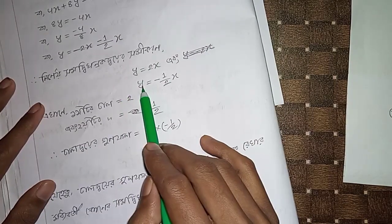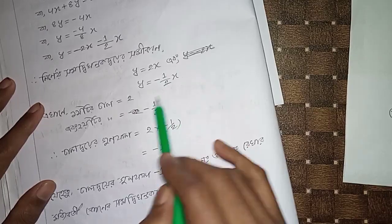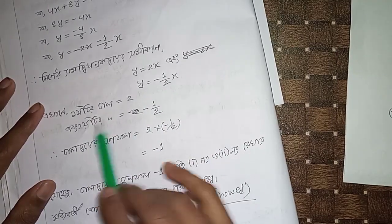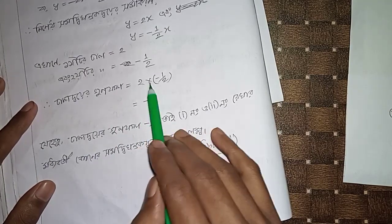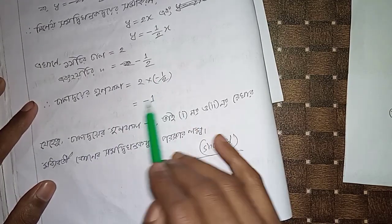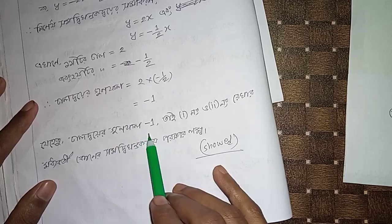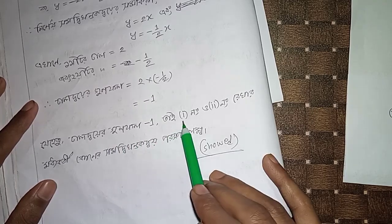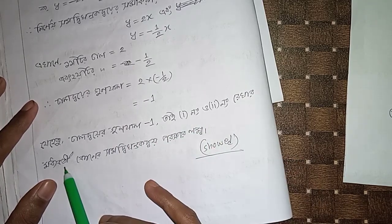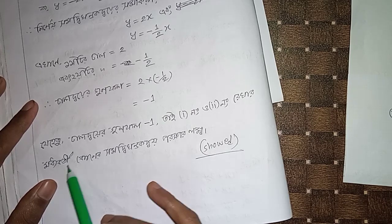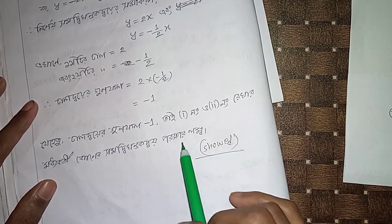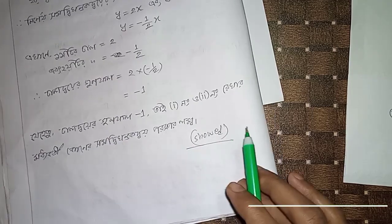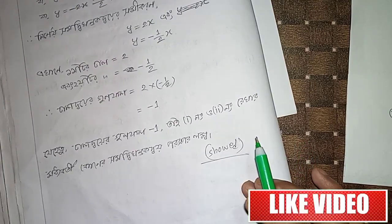y equal to minus 1 by 2x. 1x minus 1 by 2x. 1x minus 1 by 2 of all the verses, 1 times 1 by 2y minus 1 by 1x minus 1y minus 1 half, 2x minus 1 by 2. 2x minus 1, that's all.